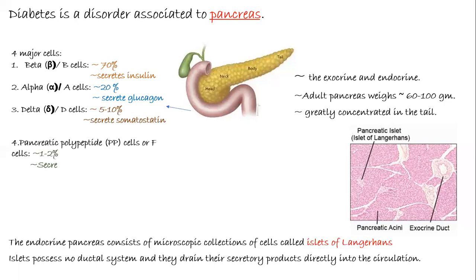The third type is the delta cells or D cells. They comprise about 5 to 10% of the cells and secrete somatostatin, which is responsible for inhibiting secretion of both insulin and glucagon. The fourth type is the pancreatic polypeptide cells, or F cells. They comprise about 1 to 2% of the islet cells and secrete pancreatic polypeptide, which has some gastrointestinal function.